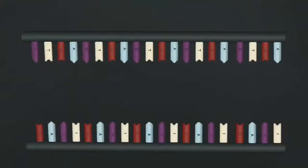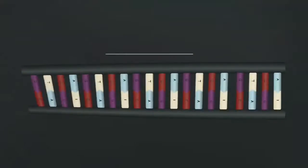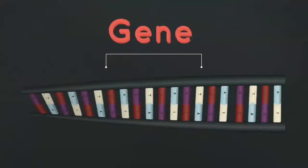DNA contains lots and lots of sequences. Some sections of these sequences have a specific genetic code for making particular proteins, and these special sections are called genes.